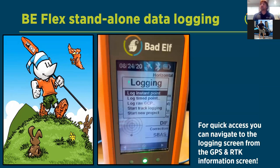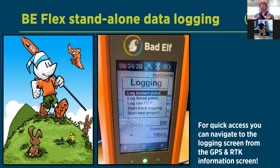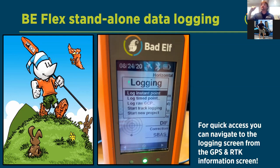We always recommend operating the Flex from the GPS/RTK information screen, which shows accuracy, vertical and horizontal values, PDOP and HDOP, sky plots, internet connection quality, correction source data rate, distance from correction source, and a digital bubble level. If you're on that screen and want to log, just hit the center enter button — it brings up the logging screen. To log an instant point, it's just two clicks and you're moving.